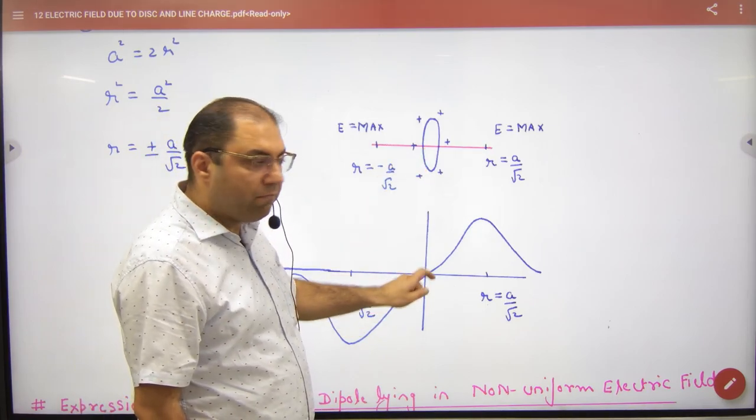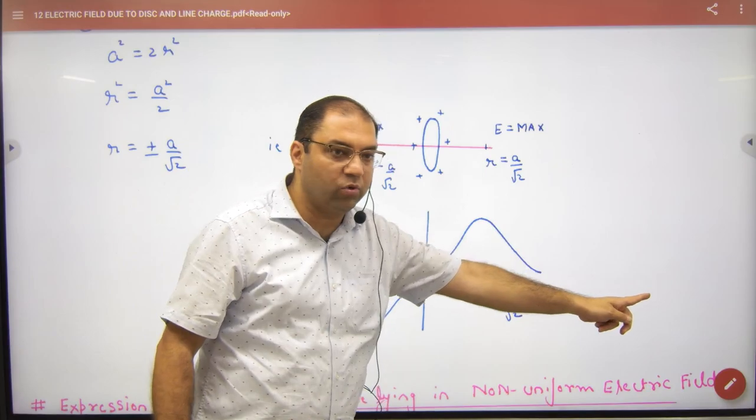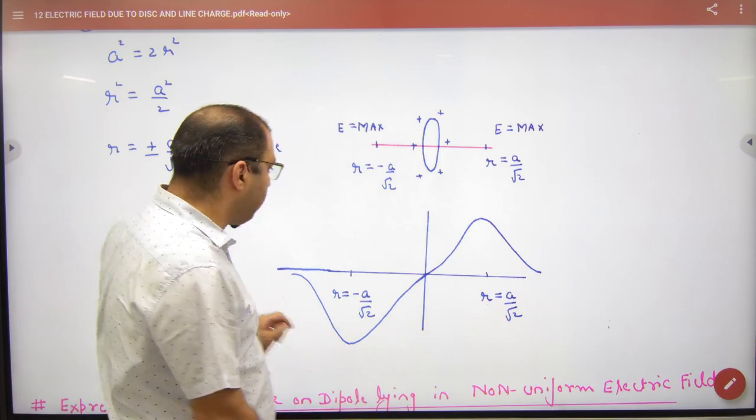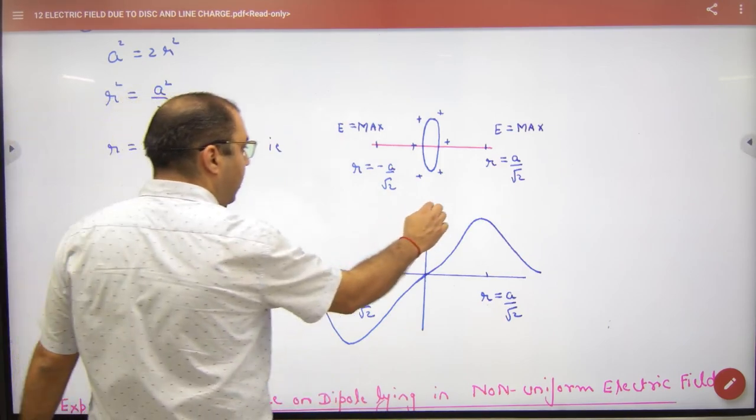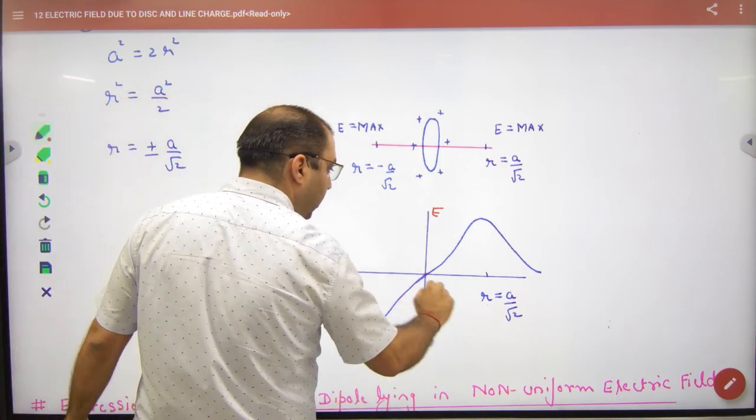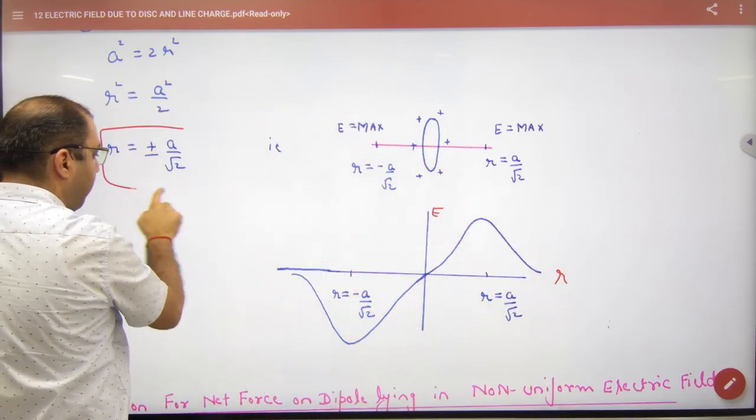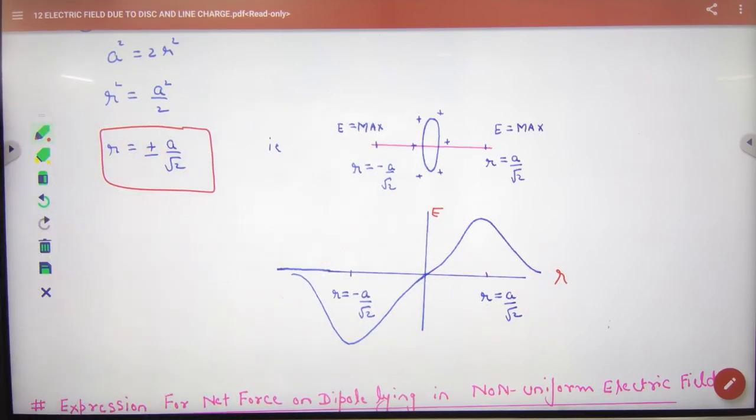Then what will happen? Zero. And a by root 2, what will happen? Maximum. Minus a by root 2, maximum. So this graph, E versus r, or E draw it, E and r. This graph is a graph. So this graph is a graph, and note this formula in the register. Enter in the register.